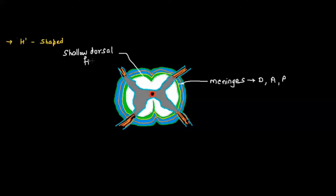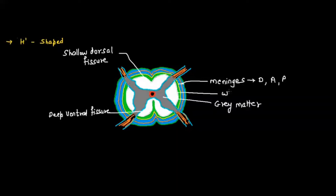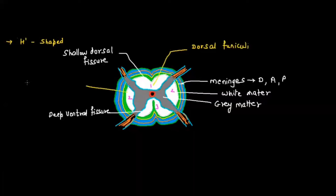The spinal cord has a shallow dorsal fissure and a deep ventral fissure. All spinal cord regions have inner gray matter and outer white matter. Because of the H-shaped gray matter, the spinal cord is divided into three parts: the upper part is the dorsal funiculus, the second is the lateral funiculus, and the third is the ventral funiculus.